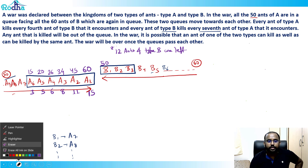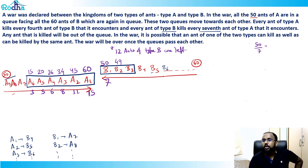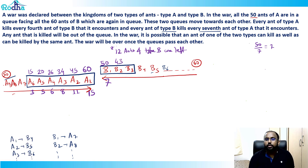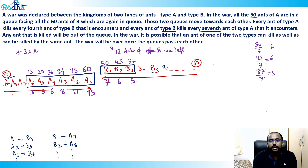After b1 kills 7, 43 ants of type A are left for b2. For b2: 43 ÷ 7 = 6, so b2 kills 6, leaving 37. For b3: 37 ÷ 7 = 5, so b3 kills 5, leaving 32 ants of type A.